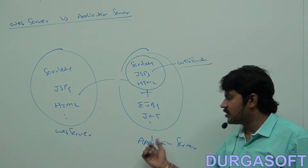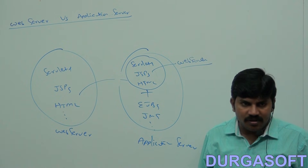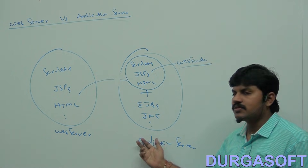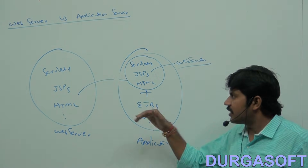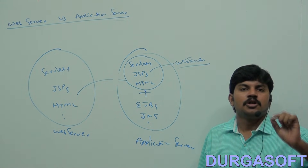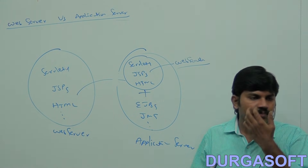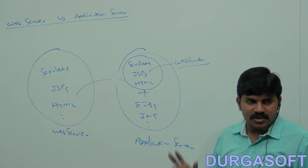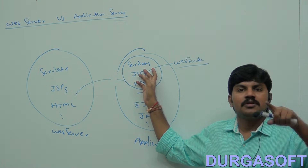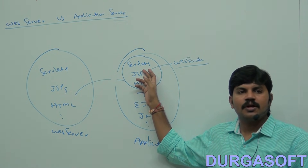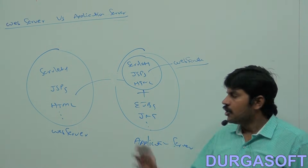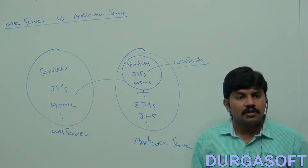If you have installed an application server on your system, is it required to also install a web server? No, because the web server is already automatically installed — when we install an application server, it internally contains an inbuilt web server. Every application server contains an inbuilt web server. Sometimes people may not be satisfied with the inbuilt web server, and in that case they go ahead and install a web server separately.